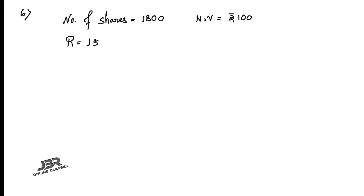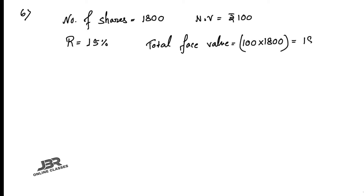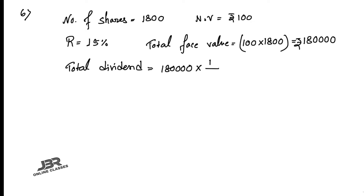First, calculate the annual dividend. Total face value = 100 × 1800 = ₹1,80,000. Total dividend = total face value × 15% = 1,80,000 × 15/100 = ₹27,000. That is your first answer.